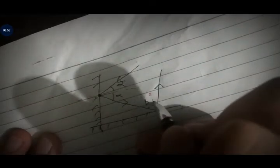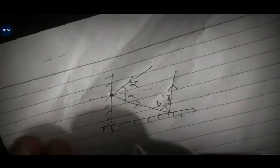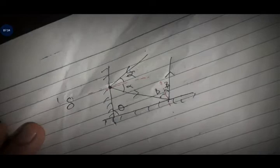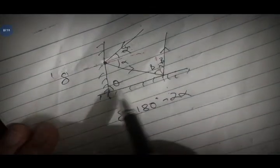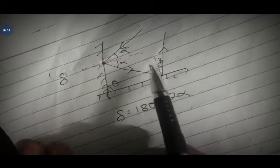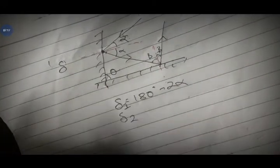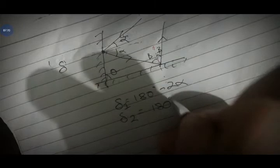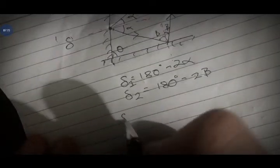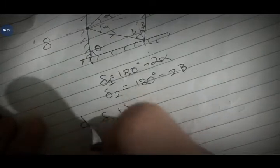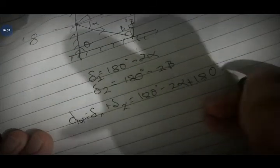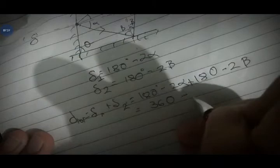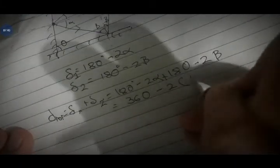Beta is equal to beta for the plane mirror. The angle of incidence on the first mirror is alpha, so the reflected angle is alpha. The deviation from mirror one is 180 degrees minus 2 alpha. The angle of incidence on the second mirror is beta, so deviation two is 180 degrees minus 2 beta. Deviation 1 plus deviation 2 equals total deviation: 180 minus 2 alpha plus 180 minus 2 beta equals 360 degrees minus 2 times (alpha plus beta).